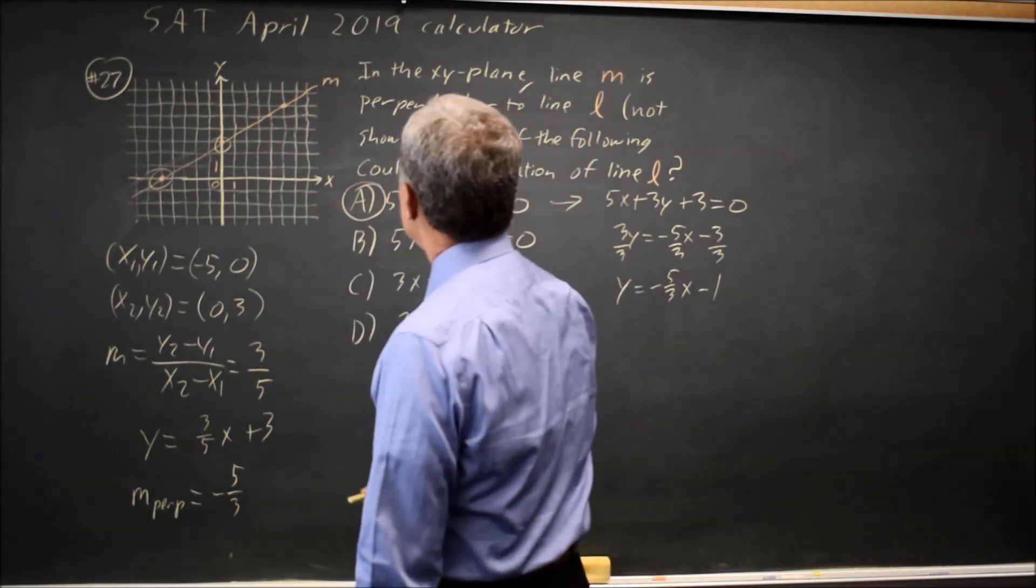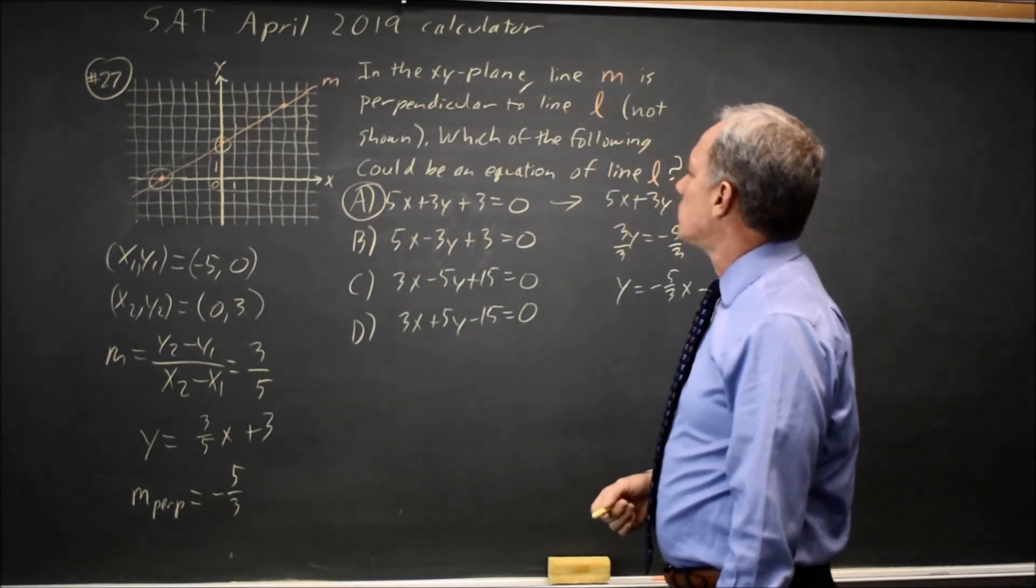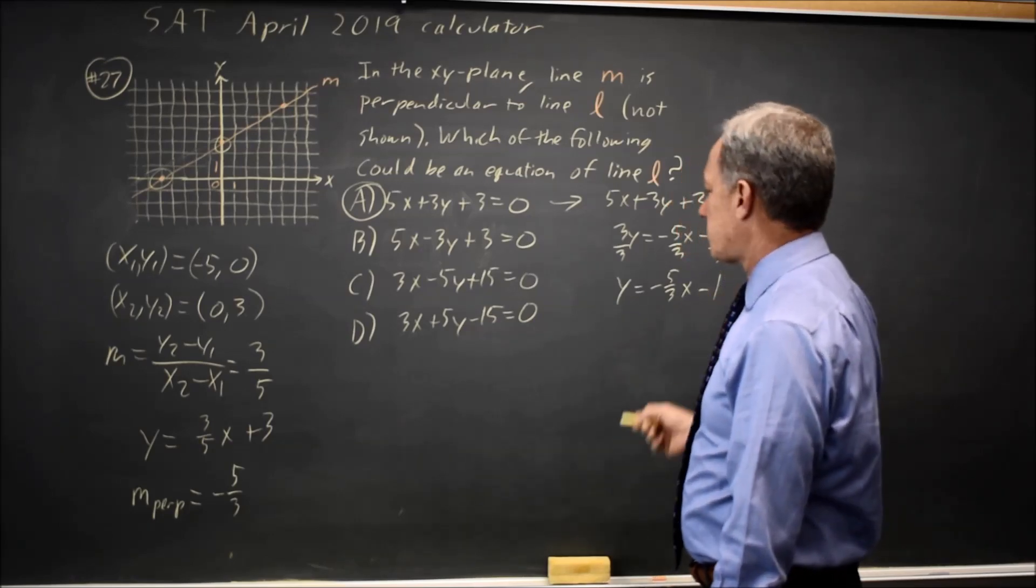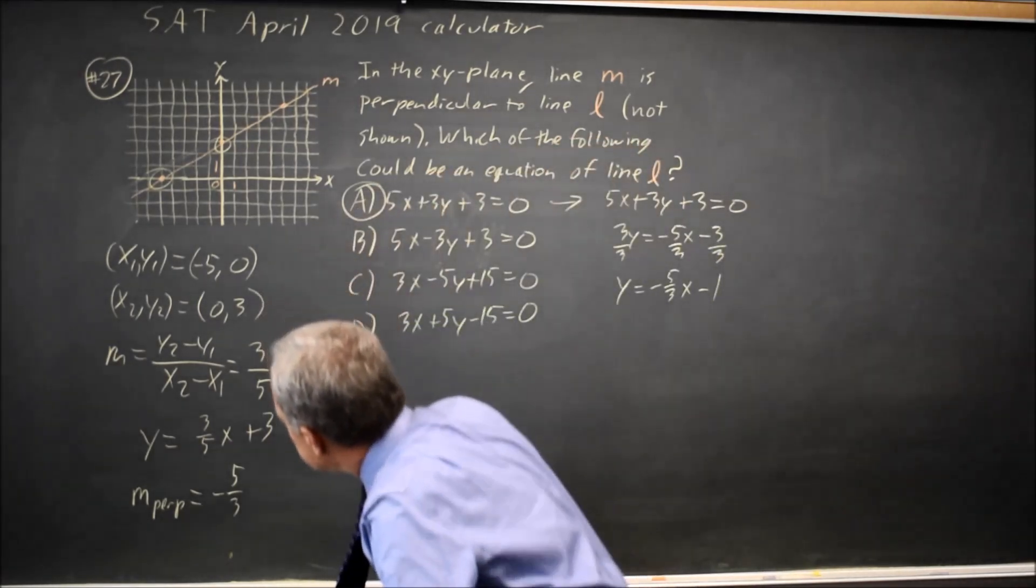So choice A is one of the possible equations for a perpendicular line. Any y-intercept would still be perpendicular if we had that slope.